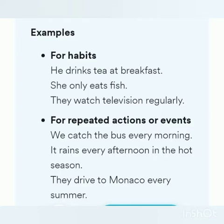But be careful — the simple present is not used to express actions happening now. Let us see the examples. For habits: 'he drinks tea at breakfast,' 'she only eats fish,' 'they watch television regularly.' For repeated actions or events: 'we catch the bus every morning,' 'it rains every afternoon in the hot season,' 'they drive to Monaco every summer.'